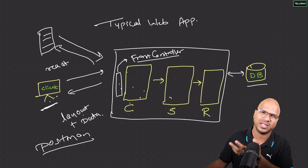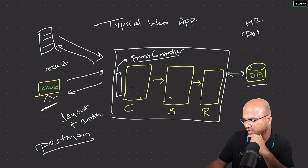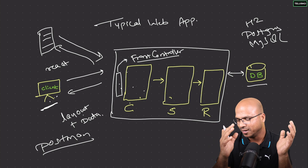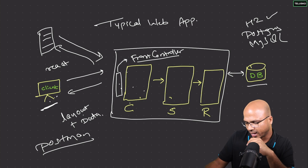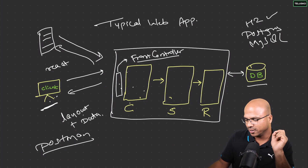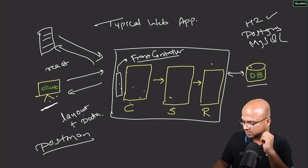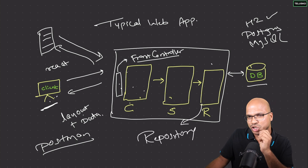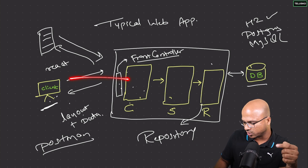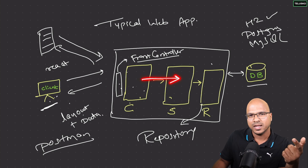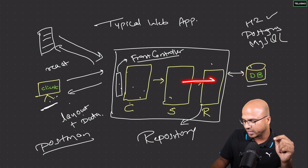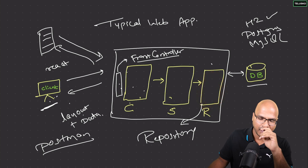The service layer processes any data or calculations. But at this point we have not worked with a database — the data is hard-coded in the service layer, which is not a good idea. We want to store this data in a database. It can be H2, Postgres, or MySQL — your choice. To talk to the database, we have to work with the repository layer, whose job is to connect with the database.